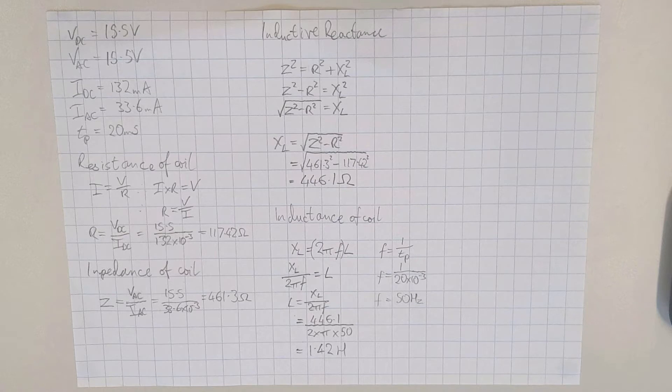Hello and welcome to this electrical principles training video. In a previous video in this series we looked at what happened when we took a coil and connected it to a DC supply and then to an AC supply. We took various readings of voltage and current, and then we proceeded to calculate the resistance of the coil, the impedance of the coil, the inductive reactance, and the inductance of the coil.